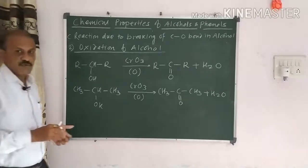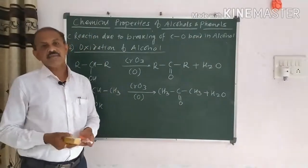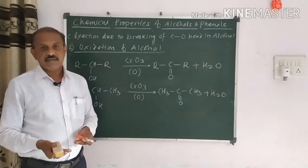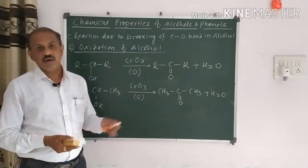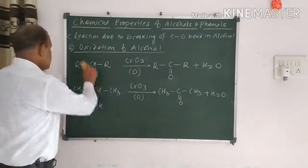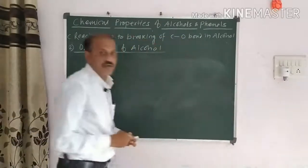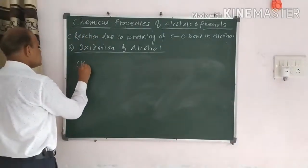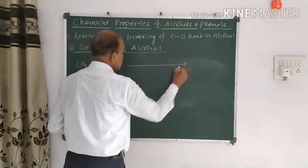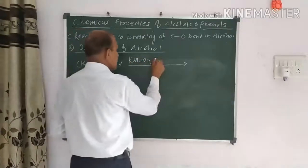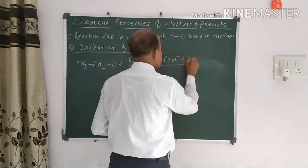One important reaction frequently observed in the syllabus uses other oxidizing agents: potassium permanganate KMnO4, potassium dichromate K2Cr2O7, or nitric acid HNO3. These are also used for the oxidation process. Taking primary alcohol CH3CH2OH and reacting it with KMnO4, K2Cr2O7, or HNO3.